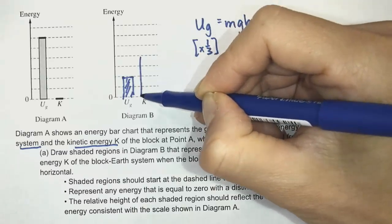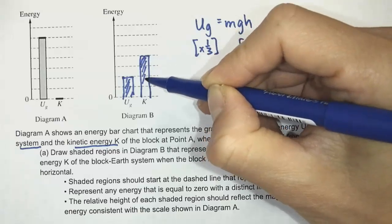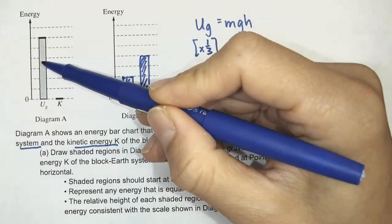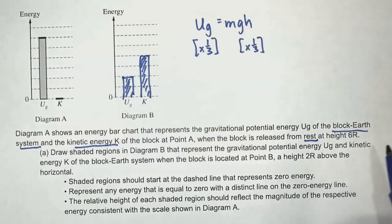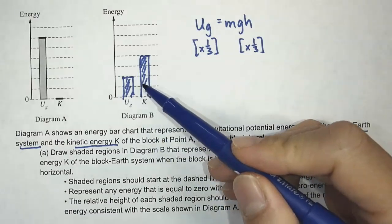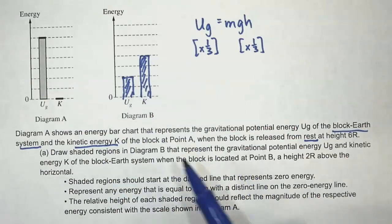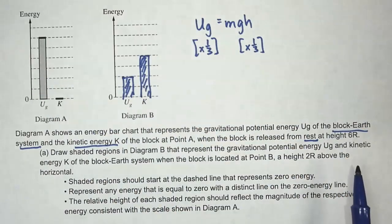The reason I know it's going to be four is because it needs to add up to six. Since we started off with six amounts of energy, we need to end up with six amounts of energy. There was no energy that left our system, there was no friction. So this should equal the same amount of energy that we started off with.